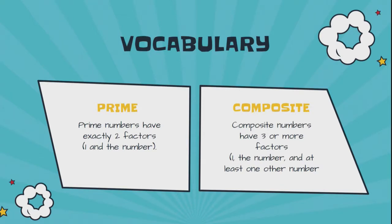First of all, prime numbers have exactly two factors. No more, no less. Those factors are always one and whatever the number is that you're looking at. Composite numbers have three or more factors. So, one and the number, and then at least one other number.